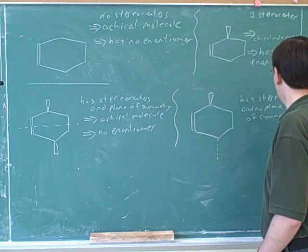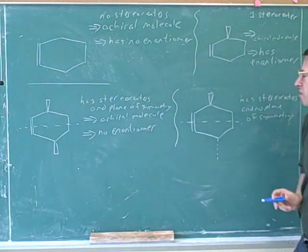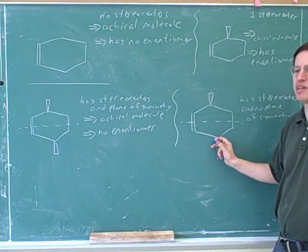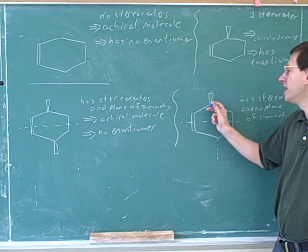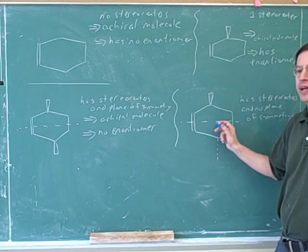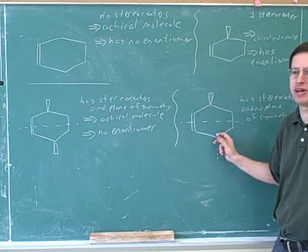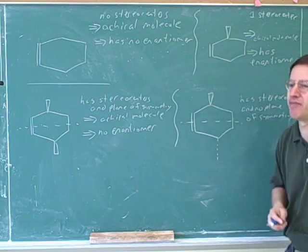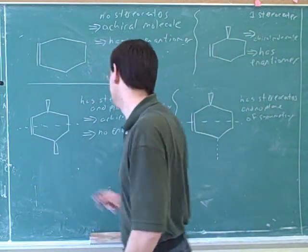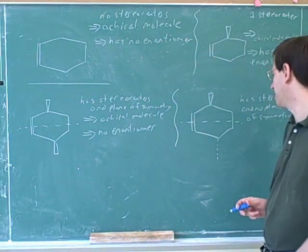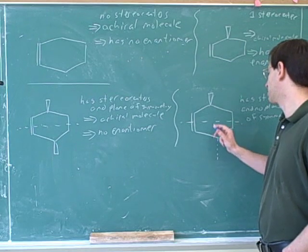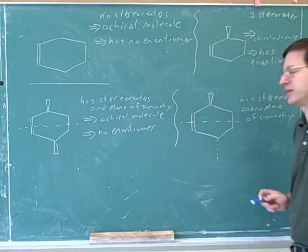A lot of students get this wrong. A lot of students think that this is still a plane of symmetry, but it's not — because if the top half of this molecule looked in the mirror, it would not see a picture that looks like this. If the top half of this looked in the mirror, it would see a picture with a wedge down here, not with a dash. You only have a plane of symmetry if you have one half that is perfectly symmetrical to the other half. It's not good enough to be almost symmetrical. In this case, the top half is perfectly symmetrical to the bottom, so that is a plane of symmetry. But in this case, the top half is not perfectly symmetrical, so there's no plane of symmetry.